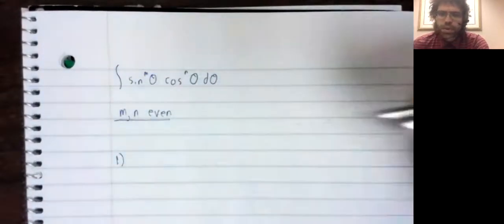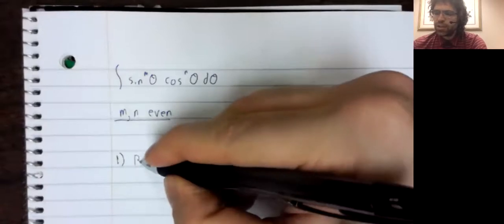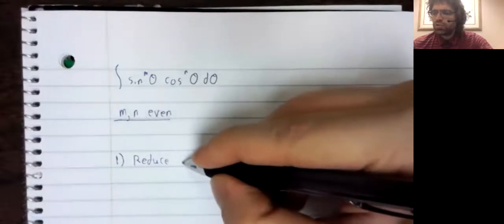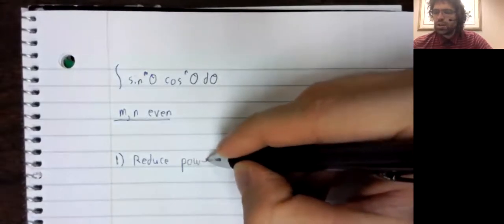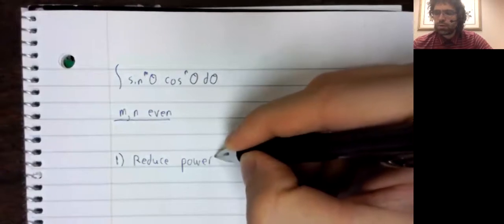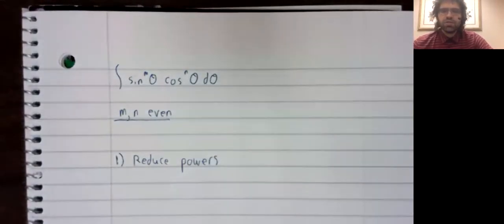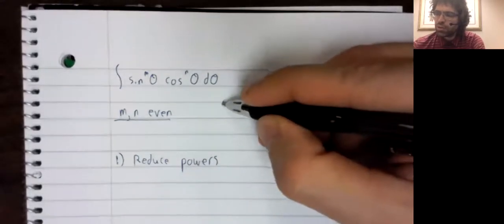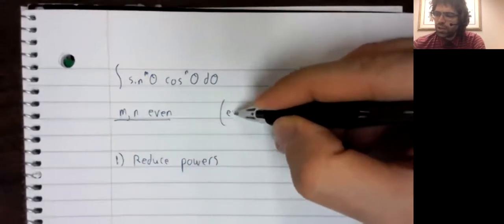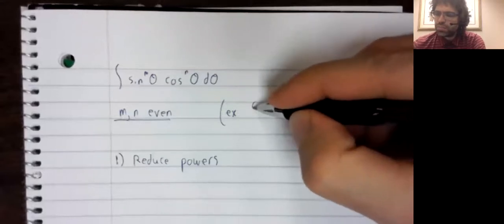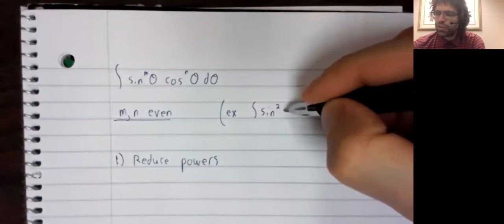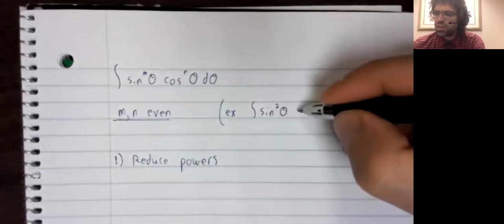The trick here, what I'll call step one, is to reduce the powers. And just as I did in the previous set of notes and the previous video, let's look at this in terms of a concrete example.